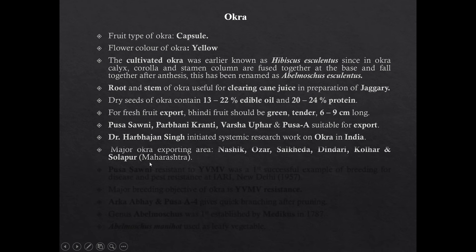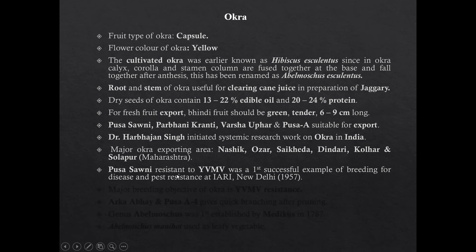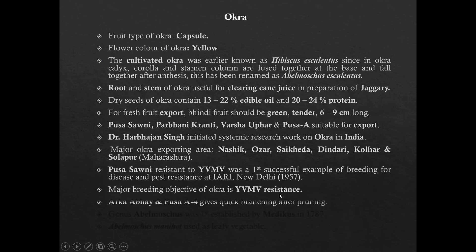Major Okra exporting areas in India are Nashik-Ozar, Sahil Kheda, Dindori, Kollar, and Solapur. Pusa Savani, resistant to Yellow Vein Mosaic Virus (YVMV), was the first successful example of breeding for disease and pest resistance at IARI, New Delhi. A major breeding objective of Okra is Yellow Vein Mosaic Virus resistance. Arka Abhay and Pusa A4 give quick branching after pruning and are suitable for ratoon crop.